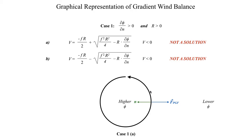Looking at the Coriolis force — since we're in the northern hemisphere, the Coriolis force acts to the right of our air parcel's motion. So if our air parcel is rotating counterclockwise, then the Coriolis force must be directed outward, away from the center of our circulation. Our centrifugal force also points away from the center of circulation. Gradient wind balance is a balance between pressure gradient force, Coriolis force, and centrifugal force.